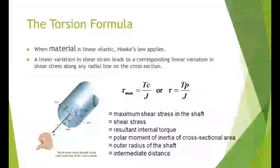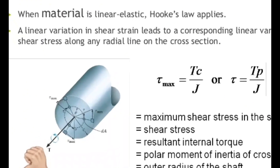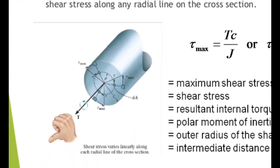For the torsion formula, when the material is linear elastic, Hooke's law applies. A linear variation in shear strain leads to a corresponding linear variation in shear stress along any radial line on the cross section. Tau_max equals tc/j, or tau equals tp/j. Shear stress varies linearly along each radial line of the cross section.